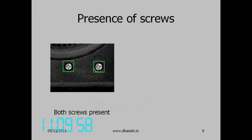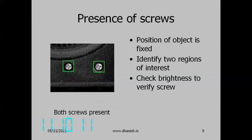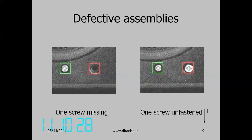Similarly, people used to forget to put screws. How do we check whether the screws are present? You measure brightness. A screw may be missing altogether, or a screw may be present but not tightened. An unfastened screw is very bright. If it is missing, it is totally black. If it is unfastened — not screwed into the body — it will reflect more light and be brighter. These are all examples of defective signals detected by the system.